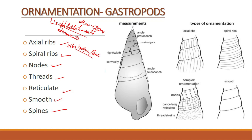Axial means something parallel to the axis. In a gastropod shell, you may find these types of lines present in the shell. The axis of coiling in a gastropod shell is here, and the ribs are somewhat parallel to the axis of coiling — that's why these are called axial ribs.